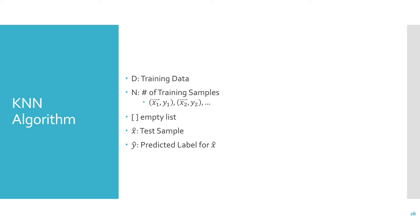The algorithm is very simple. Now let's go through the steps a little bit more formally, and so let's define a couple things first. The training data is going to be called D, so that's just going to be a set that has all the training data in it. N is going to be the number of training samples, and the training samples look like this, where we have a feature vector and a label, a feature vector and a label, and so on. This is going to be our empty list, and our test sample is going to be represented by x hat, and the prediction that we make on x hat is going to be y hat.